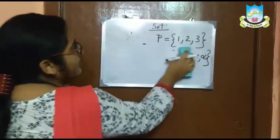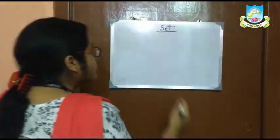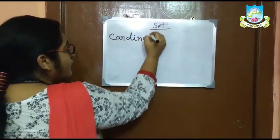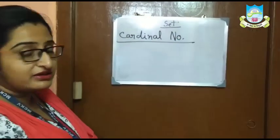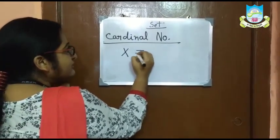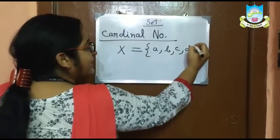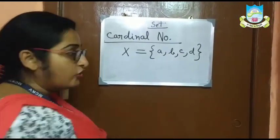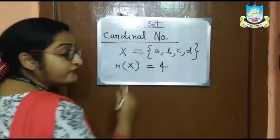Now we will learn about the cardinal number or the cardinality of a set. The cardinal number of a set is the number of elements of a set. Suppose set X has the elements A, B, C and D — so there are four elements. The cardinal number or cardinality of set X will be 4.